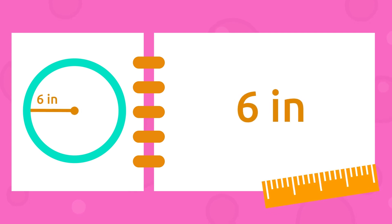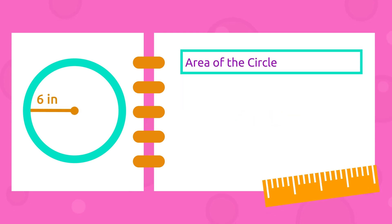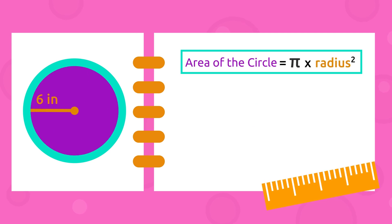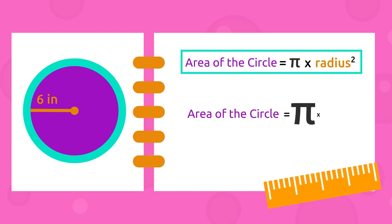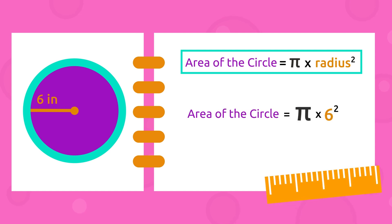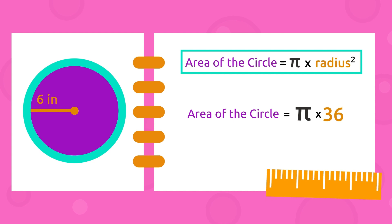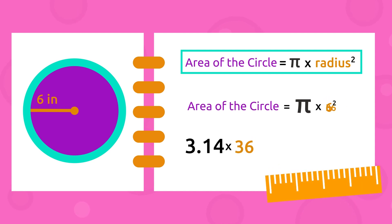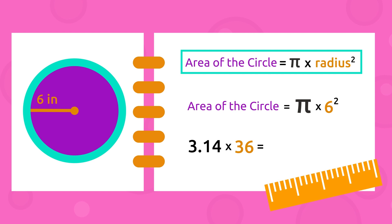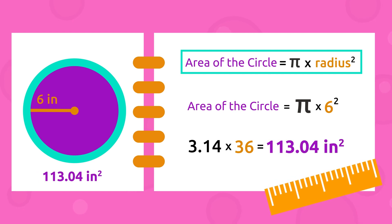To find the area of the circle, we multiply pi by the radius squared — in other words, multiply the radius by itself. Six squared equals 36. Then we multiply the result by pi: 36 times 3.14 equals 113.04.